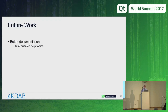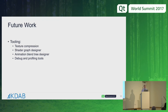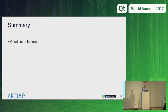For the future, obviously we want better documentation, especially task-oriented pages, more examples, and a solution for handling large assets without putting them in the Git repo. We want more performance, bug fixing, and improving existing aspects. Importantly, VR and AR support — there's already a proof of concept patch on Gerrit, so please give it a try and send feedback. My colleague Paul is also working on Vulkan support as the renderer backend for Qt3D. We're also looking at better tooling and better feedback from the engine when things don't go quite to plan, so you can find out what's gone wrong in your scene. So far we've got a pretty good set of features, and we're now focusing on stability, performance, and convenience.